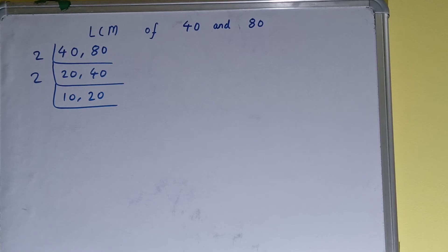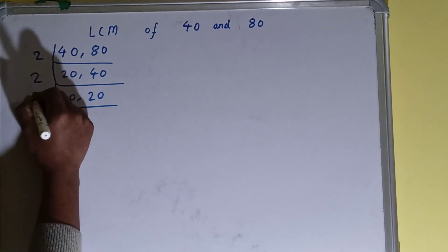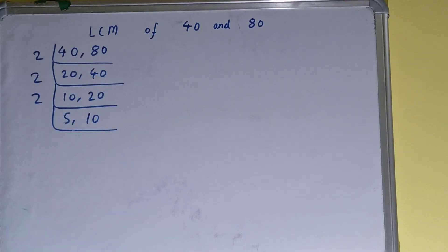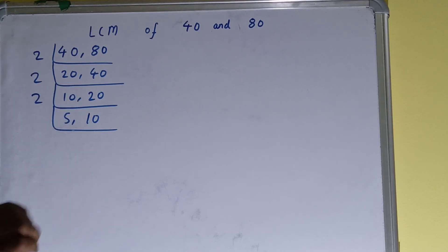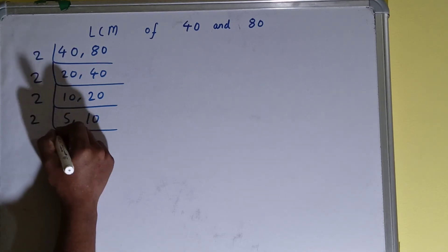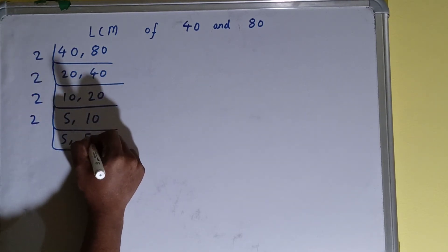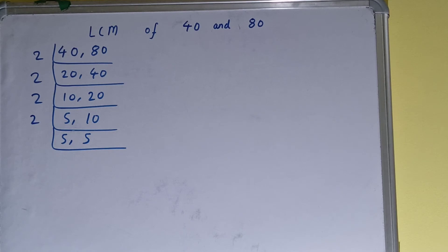Again we check if any number is divisible by 2 — both are, so we divide: 10 becomes 5 and 20 becomes 10. Checking again, only the second number (10) is divisible by 2, not the first, so we divide only the second number and copy the first down. 10 becomes 5, and 5 stays as 5.